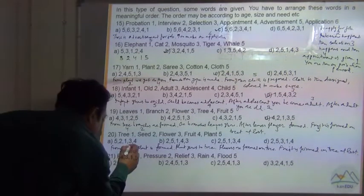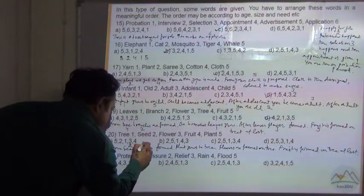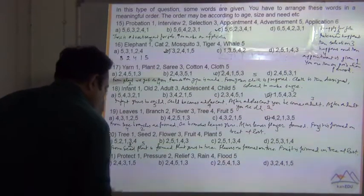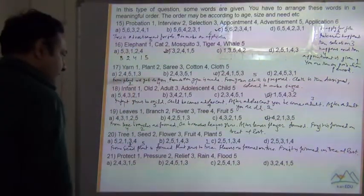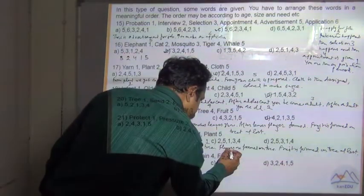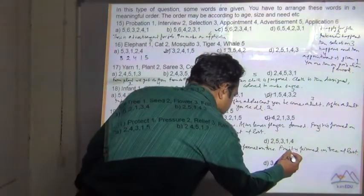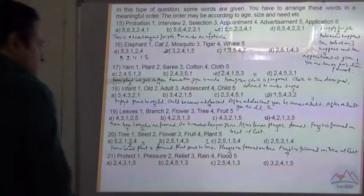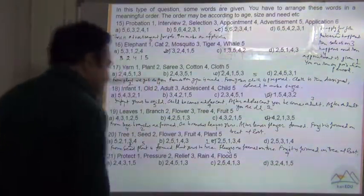So seed is 2, plant is 5, then tree is 1, flower is 3, then we have fruit 4. So 2, 5, 1, 3, 4. Your answer is C.